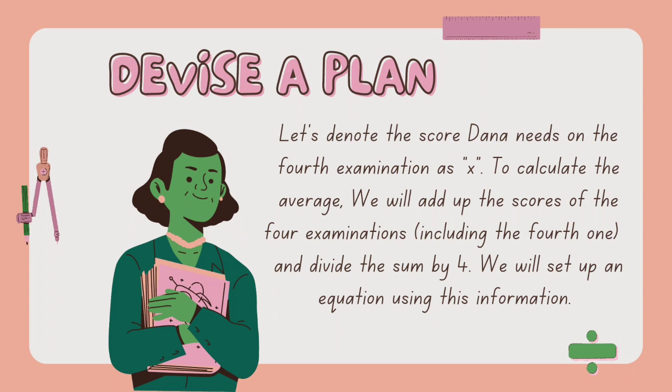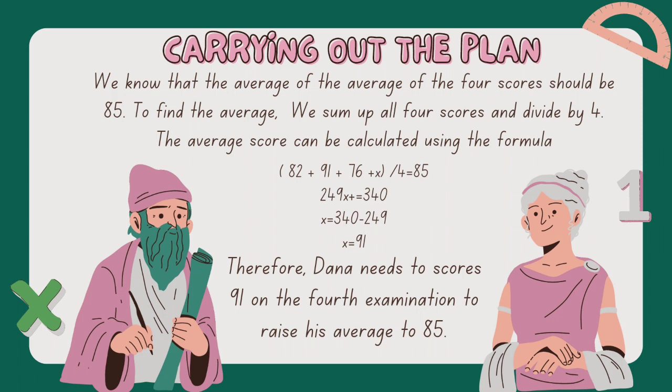The third step is carrying out the plan. We know that the average of the four scores should be 85. To find the average, we sum up all four scores and divide by 4. The average score can be calculated using the formula: (82 + 91 + 76 + X) / 4 = 85.